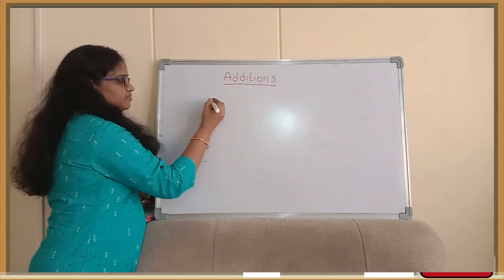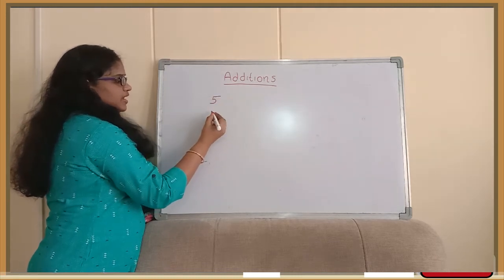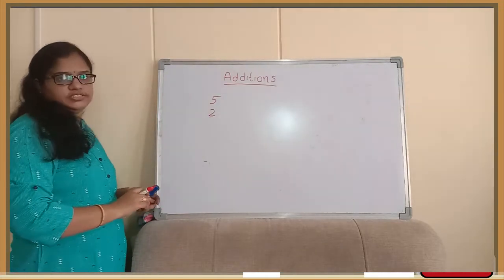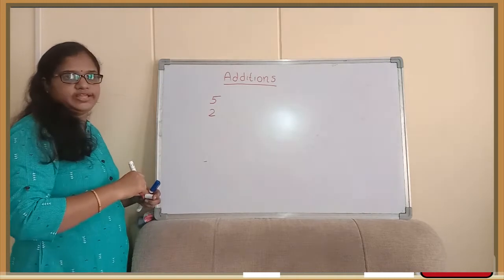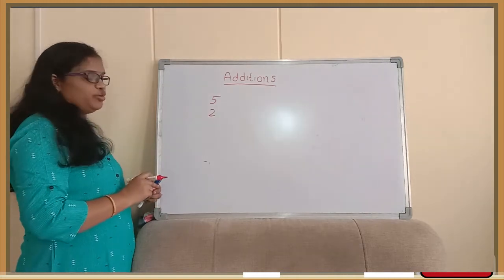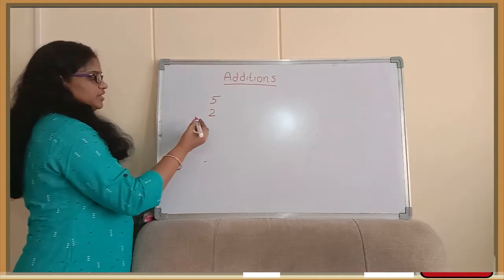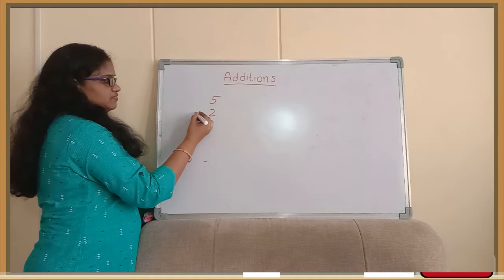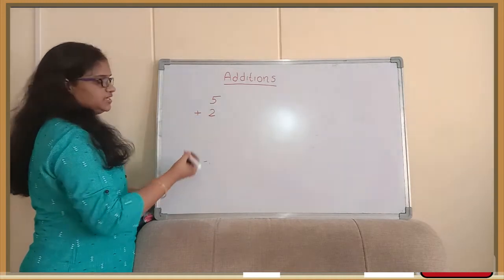So let's take 5 and 2. Here we are having 2 numbers. So joining of these 2 numbers is called addition. Joining or merging, we can say either one. For additions the symbol is plus. Plus means addition.